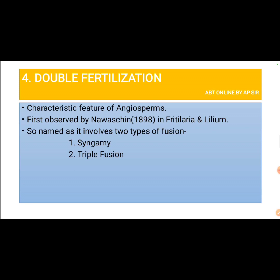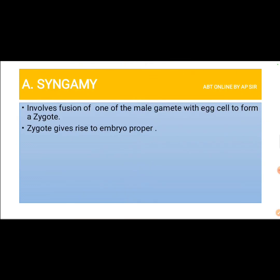Syngamy, also called true fertilization, involves fusion of one male gamete with the egg cell to form a diploid zygote. The pollen tube has discharged two male gametes into the embryo sac; one of them fuses with the egg cell. This diploid zygote gives rise to the embryo proper in subsequent development.